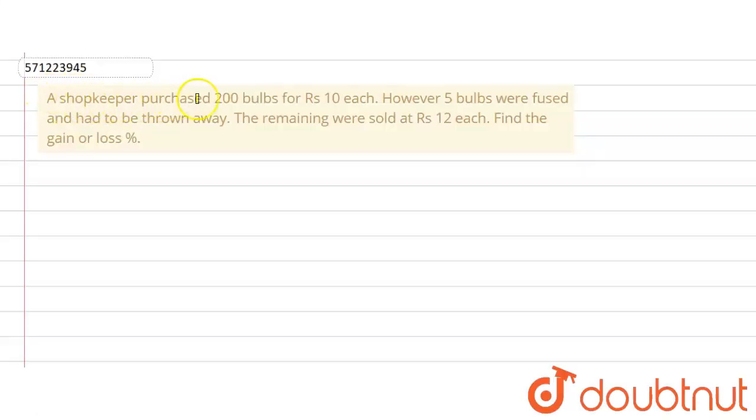Hello everyone. The given question says that a shopkeeper purchased 200 bulbs for Rs.10 each. However, 5 bulbs were fused and had to be thrown away. The remaining bulbs sold at Rs.12 each. Find the gain or loss percent.